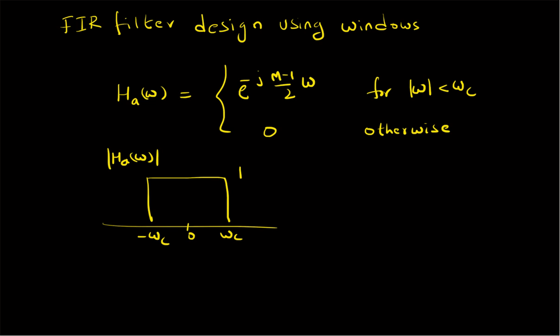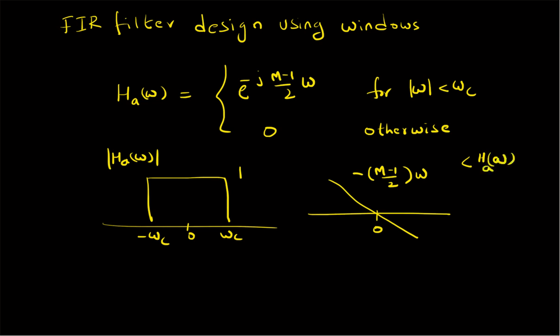For the phase spectrum, that is the phase response, it is basically a linear phase. The slope is −(m−1)/2, meaning the phase term is −(m−1)/2 · ω. Our goal is to design both the time-domain impulse response of the filter using a rectangular window and also its frequency response.